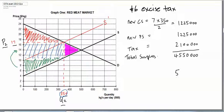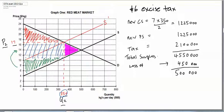So the difference is $5,000,000 minus $4,550,000, which gives us $450,000. Four hundred and fifty thousand dollars is the loss of surplus to the market.